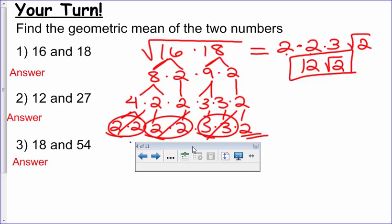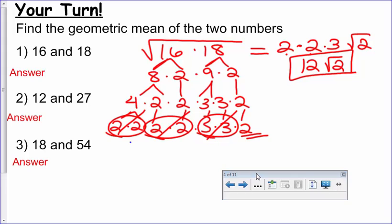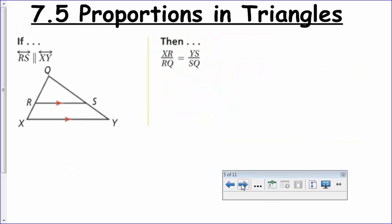All right, try finding the geometric mean between 12 and 27. And then find the geometric mean between 18 and 54. You could end up with perfect squares. What that means is your answer does not always have to have a radical with it. Okay, your answer to number 2 is 18. No more radical. It's a perfect square. Everything comes out. But in number 3, you get 18 square roots of 3. All right, so that was all of section 7.4.